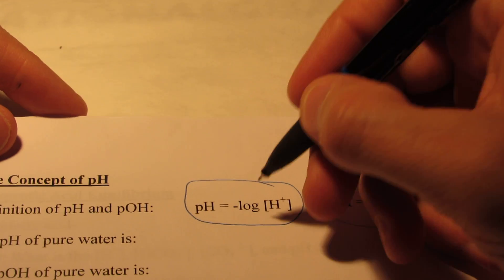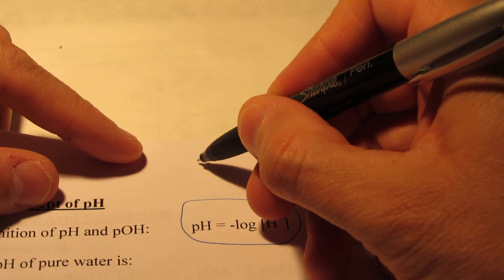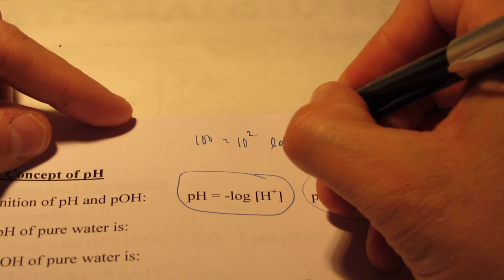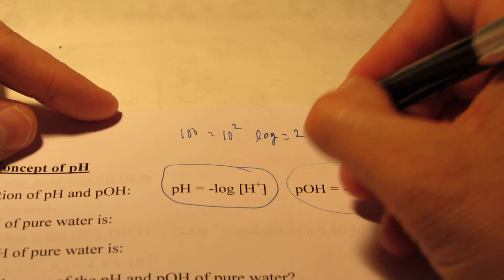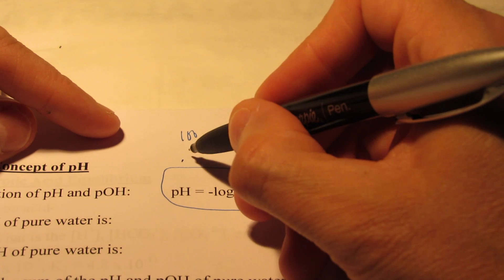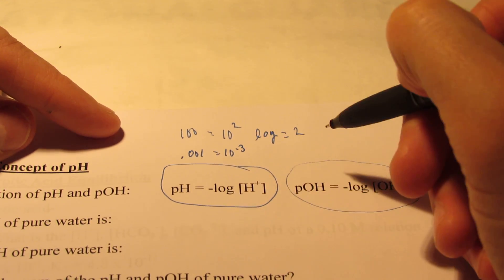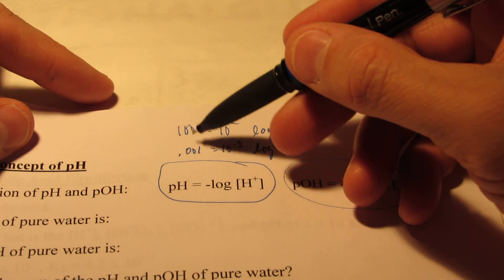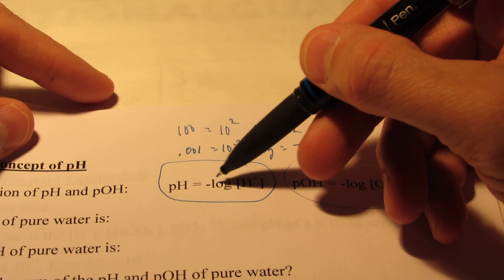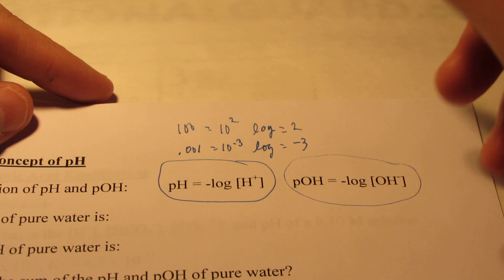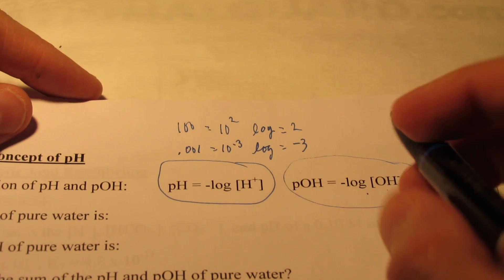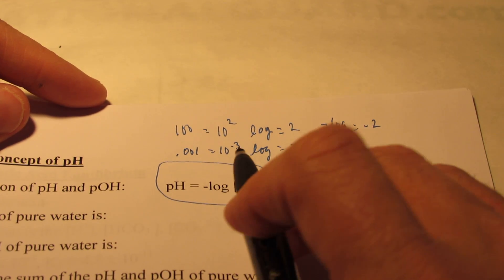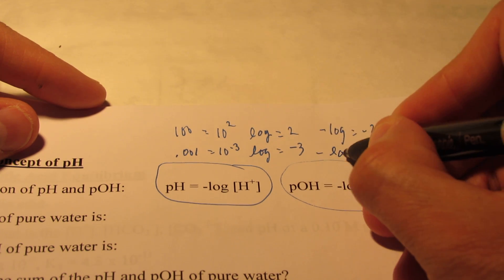Just a quick math review: remember what a log is? For instance, 100 equals 10², so the log of 100 is 2. What would the log of 0.001 be? That's 10⁻³, so the log of that number is −3. The log is simply the power of ten that expresses that number. The pH is the negative of the log of the hydronium ion concentration, and pOH is the negative log of the hydroxide concentration. So the negative log of 10² is −2, and the negative log of 10⁻³ is 3.